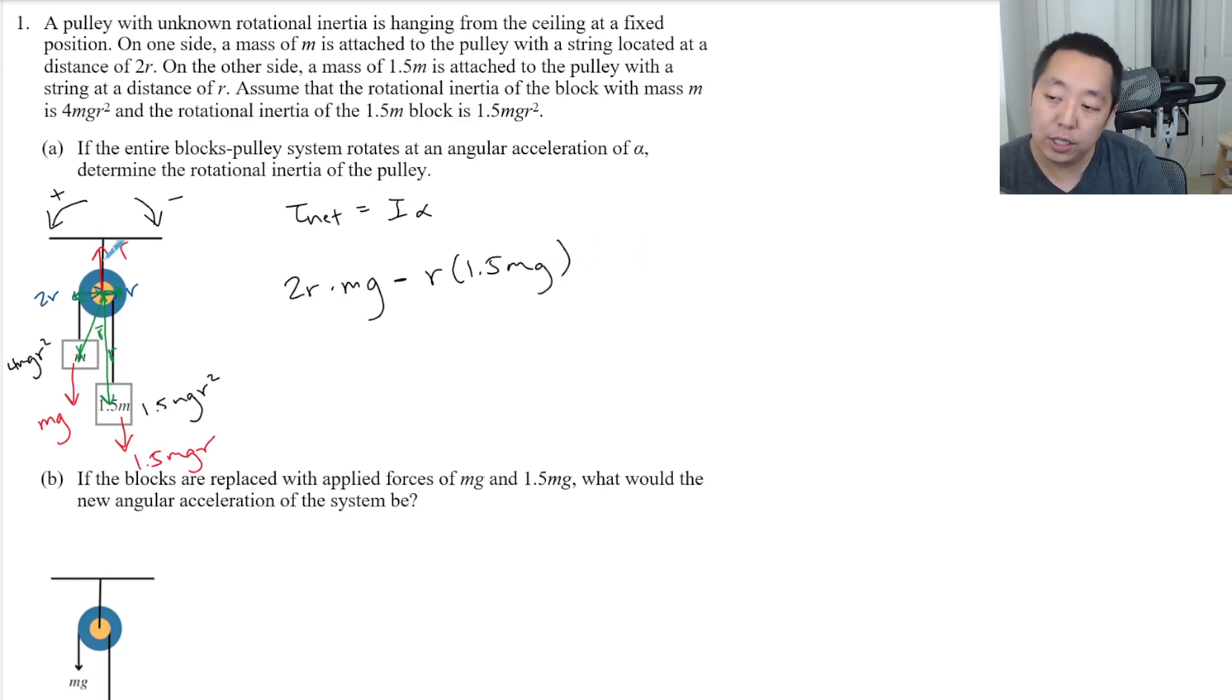Now the tension acts at the axis of rotation. It's helping hold it up, so it doesn't exert a torque on the system. And so that equals I alpha. Specifically, the R vector is zero for that tension.